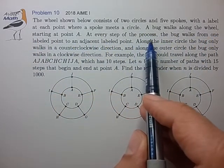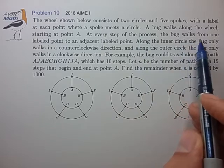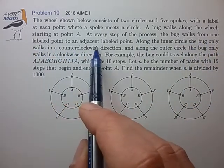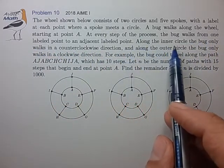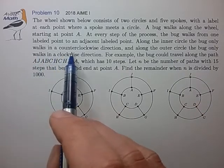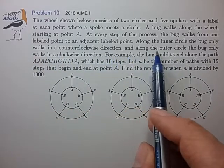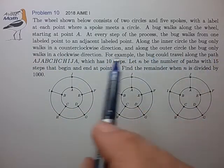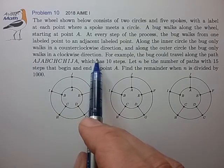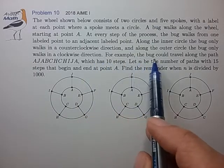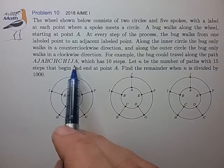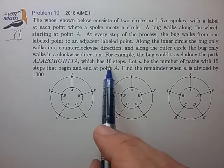At every step in the process, the bug walks from one labeled point to an adjacent labeled point. Along the inner circle, the bug only walks in a counterclockwise direction, and along the outer circle, the bug only walks in a clockwise direction. For example, the bug could travel this example path, which has 10 steps.